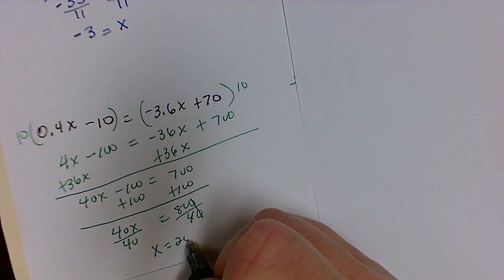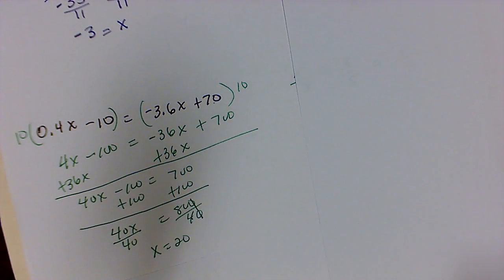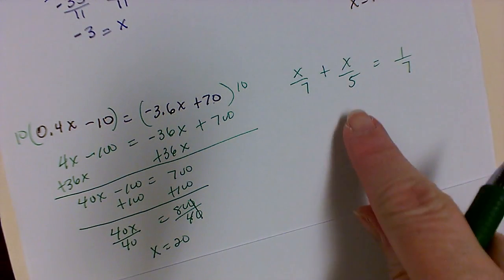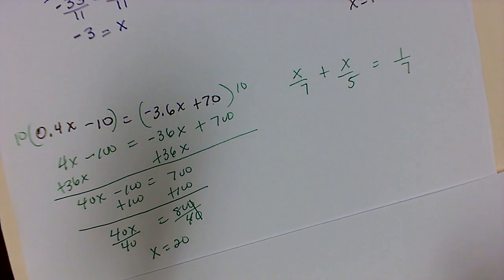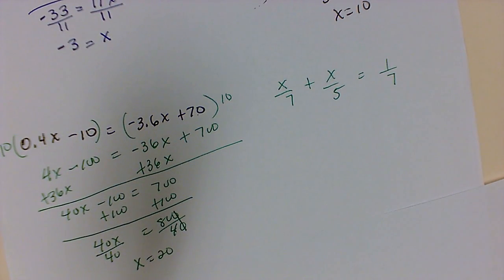So 80 divided by 4 will then get me 20. So x is equal to 20. You could divide 40 into 800. But when the zeros match at the end, you can just cross them out as long as they're right above each other. The next one we're looking at is clearing the fractions with an LCD. And we're again still solving for x.